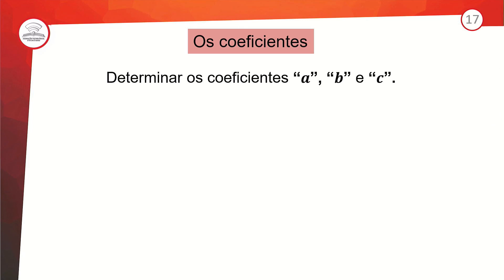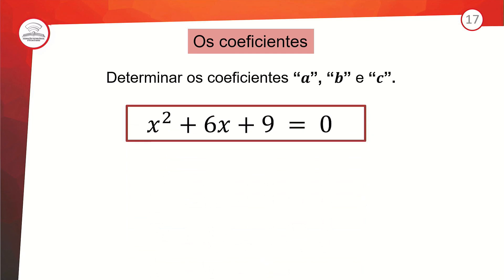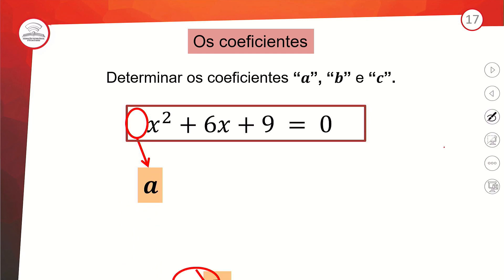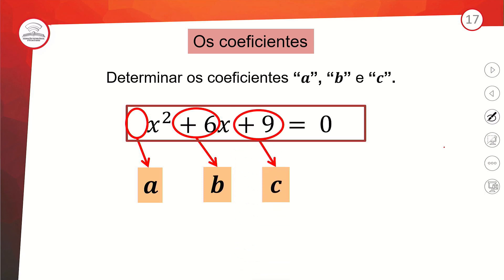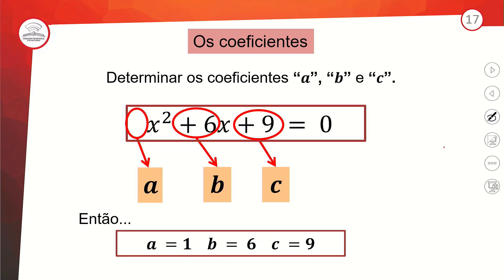Vamos fazer um exemplo. A função é x² mais 6x mais 9. Primeiro passo: encontrar os coeficientes. Quem é o A? Não tem ninguém antes do x² — na multiplicação o ninguém é o 1, então A = 1. O B é 6 e o C é 9. Primeiro passo dado.